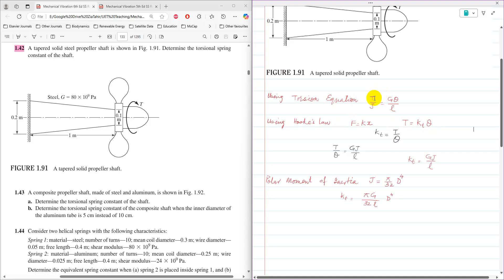Then torsion equation can be rearranged as T over theta is equal to G J over L, and then T over theta is actually KT.